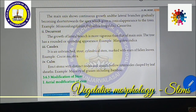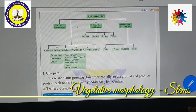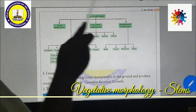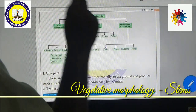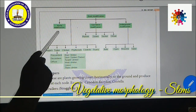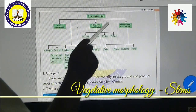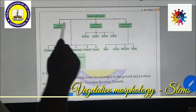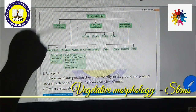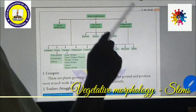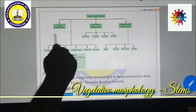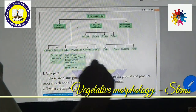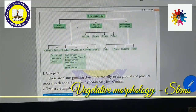Now, what are the modifications that take place in the stem? Due to secondary functions, stems are modified in some form. Stem modification is broadly divided into three types: aerial modification (above ground level), sub-aerial modification (on the ground surface), and underground modification (below ground level).